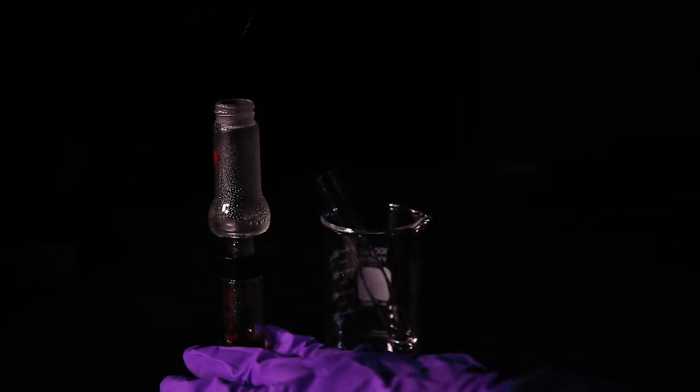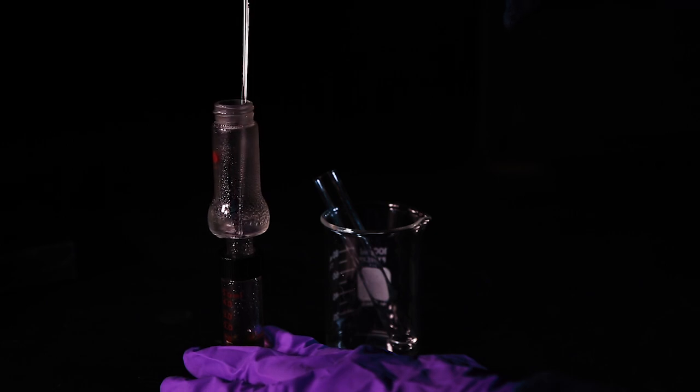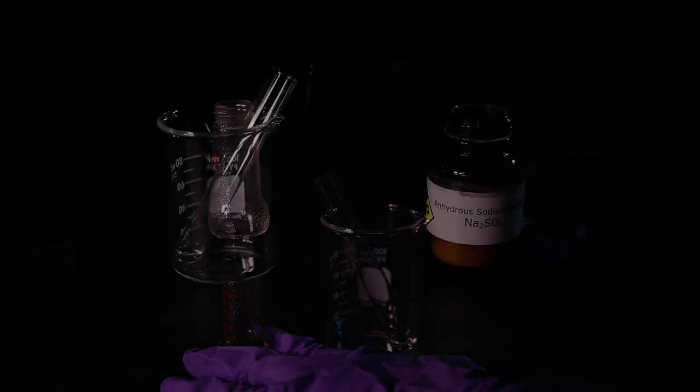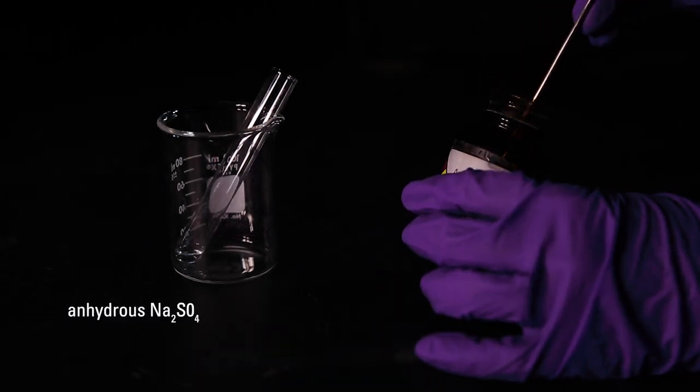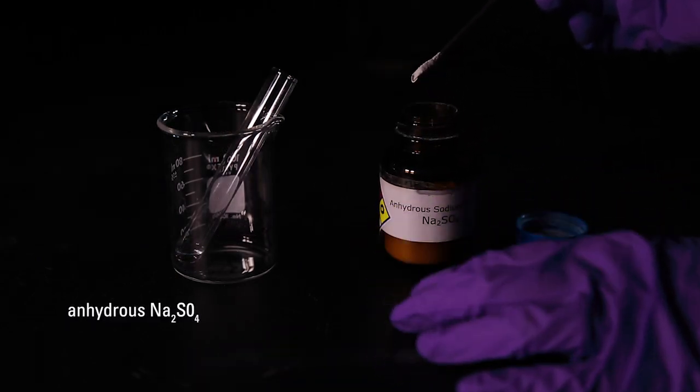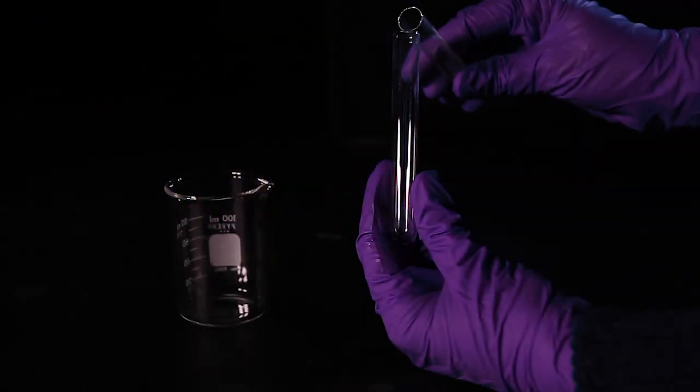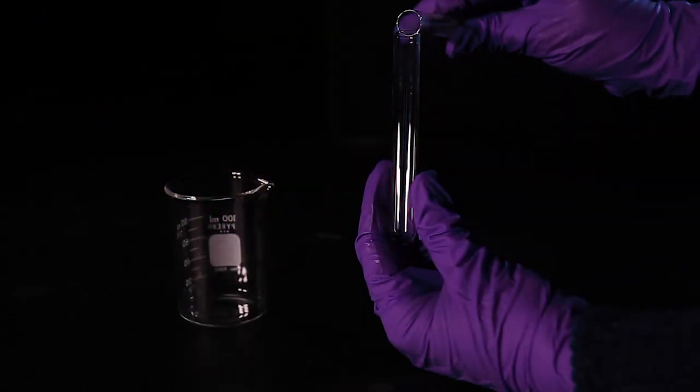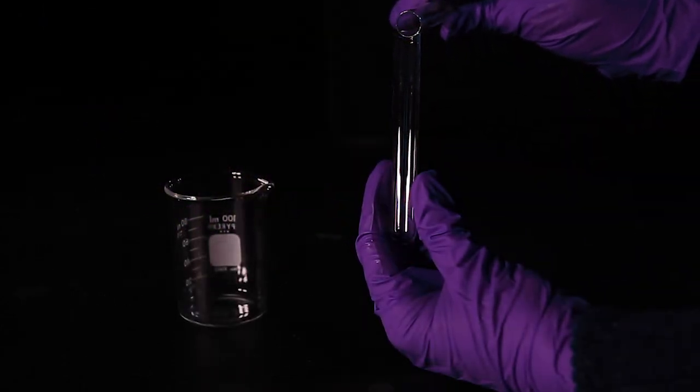Using a long-stemmed Pasteur pipette, transfer the liquid accumulated on the lip of the stillhead to a clean test tube. Add a small amount of anhydrous sodium sulfate and let it dry for two minutes. Carefully transfer the dried liquid into a clean test tube.